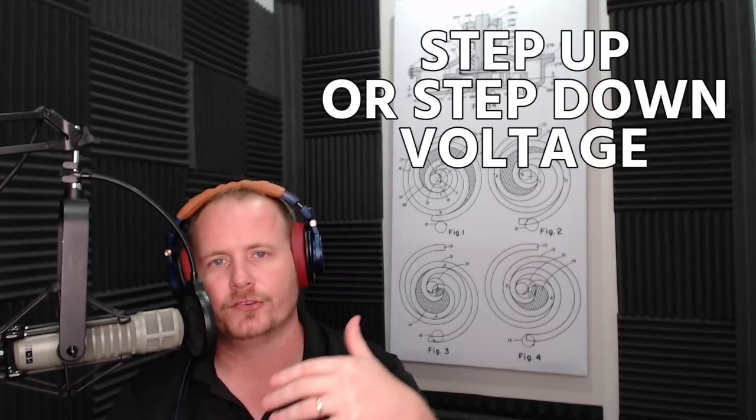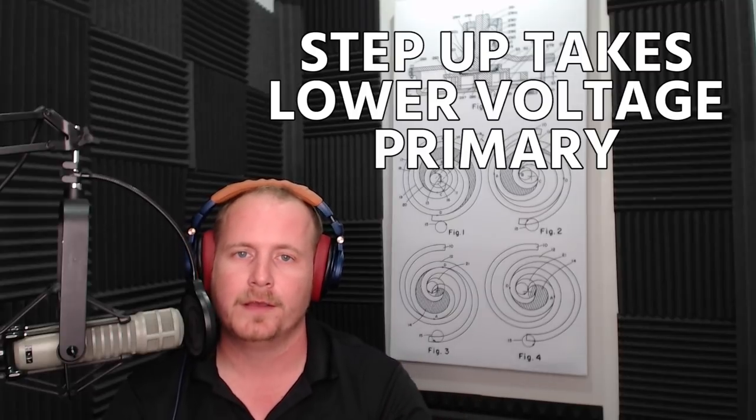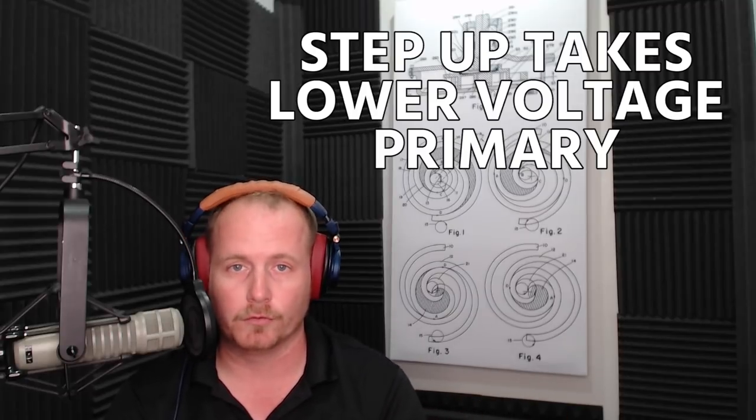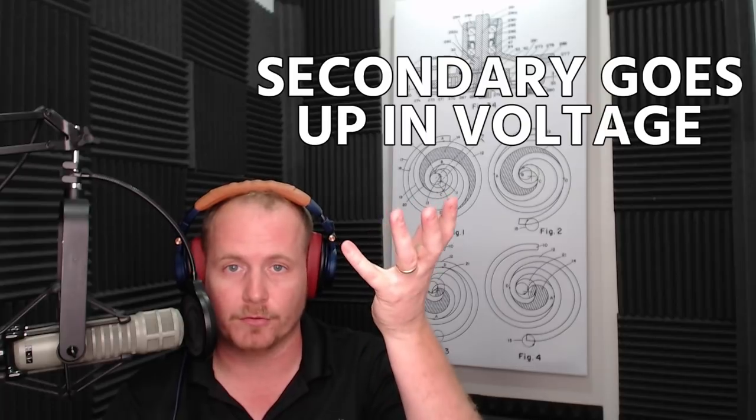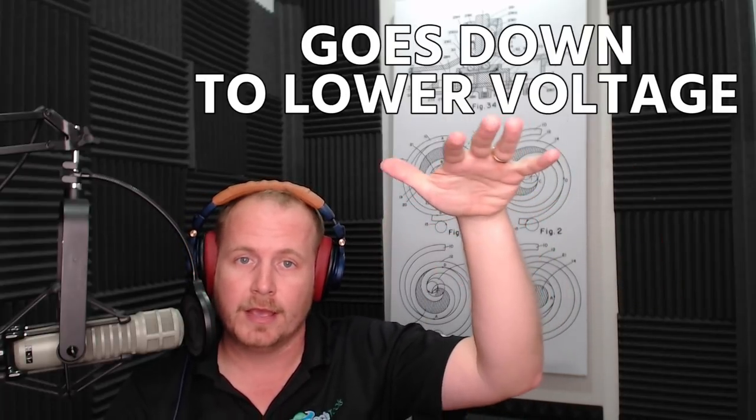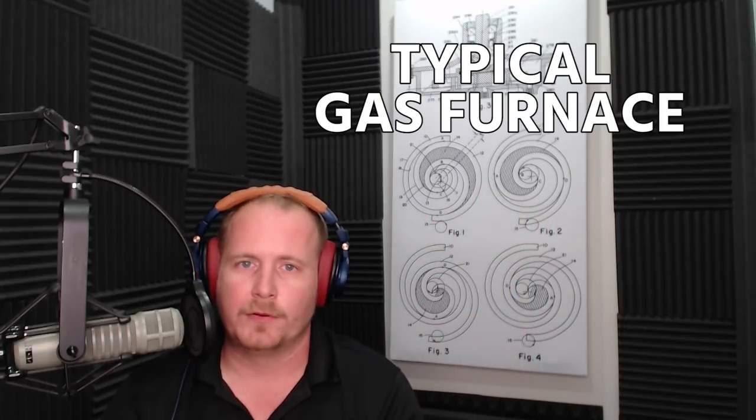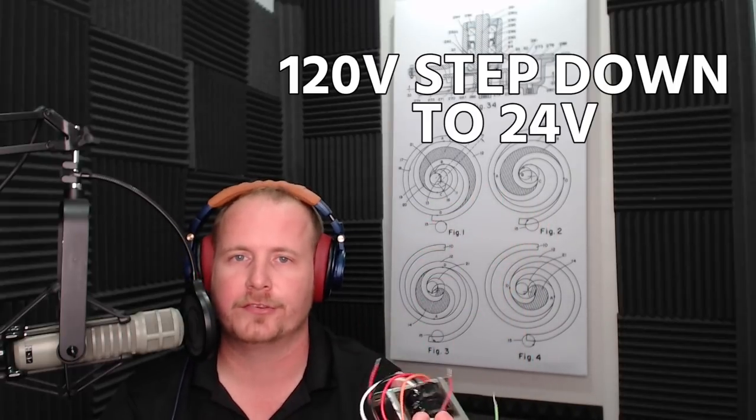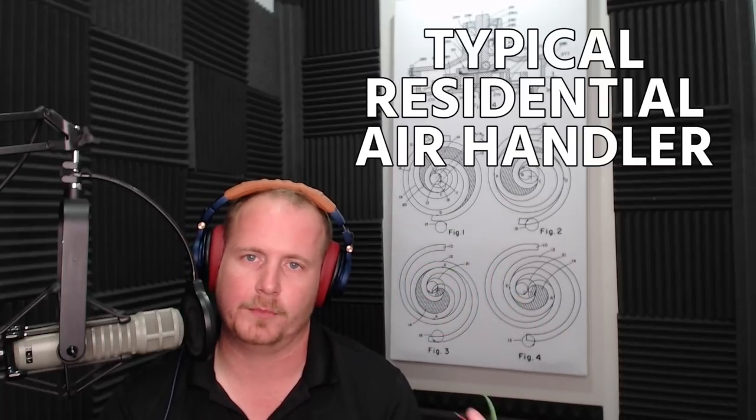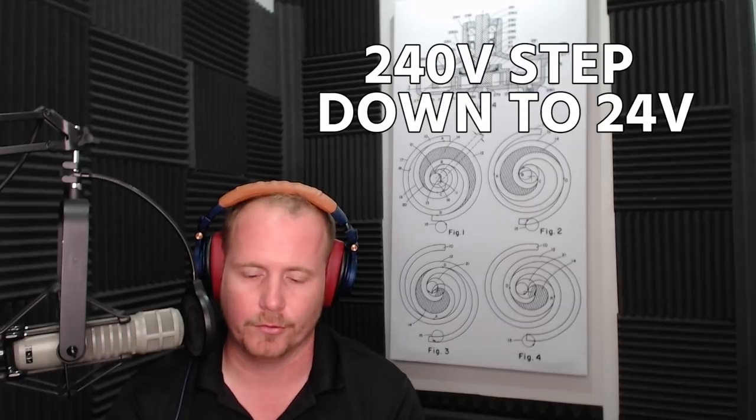What does a transformer do? A transformer is designed to change a voltage, either step up or step down. A step up transformer takes a primary that is of a lower voltage, and then the secondary goes up in voltage. Or step down where the primary is a higher voltage, and it goes down to a lower voltage, which is what we have right here. This is a step down transformer. If I was going to use this in a typical gas furnace, then it would be 120 volts, step down to 24 volts. And a typical residential air handler would be 240 volts, step down to 24 volts.